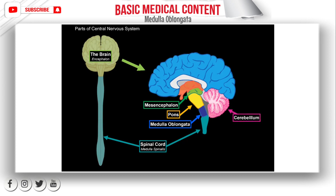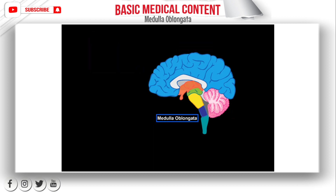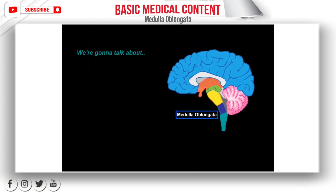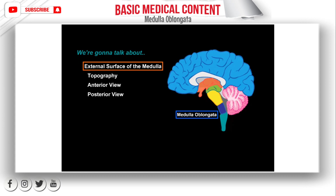We have the cerebellum back here, then the diencephalon and the telencephalon. Our focus in this video is going to be the medulla oblongata. We're first going to cover the external surfaces of the medulla — its topography and structures from an anterior view and a posterior view. Then we're going to slice up the medulla to look at the internal surface, to see how the gray matter and white matter are arranged. At the end of this video, you'll find a quiz.